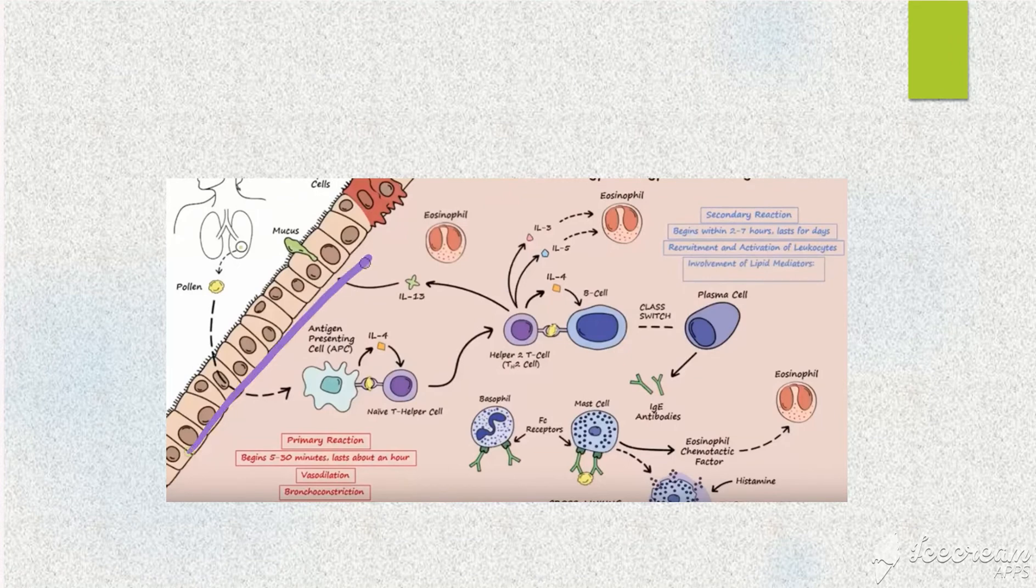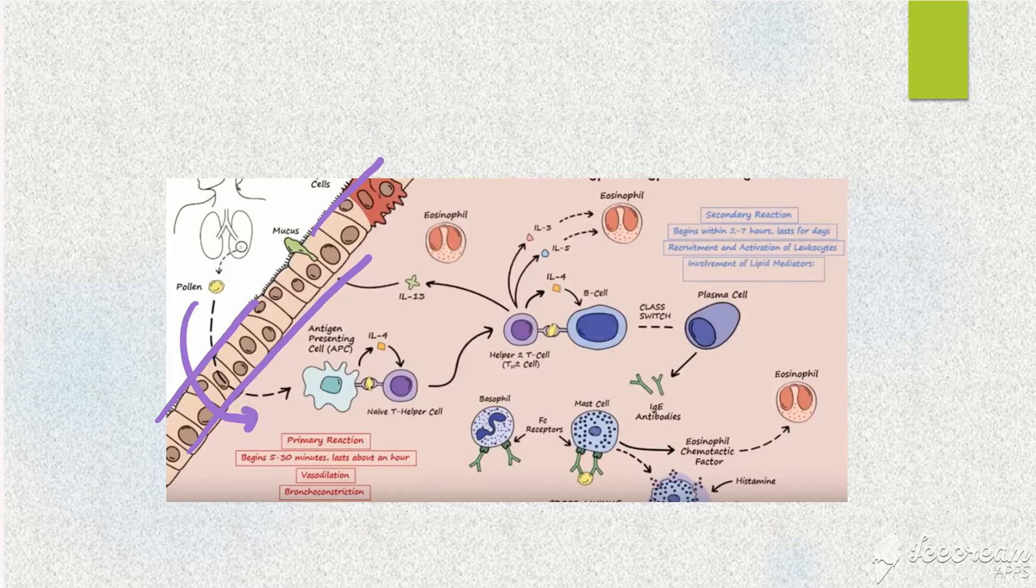This is your respiratory epithelium, your ciliated columnar epithelium. Your pollen grain is entering and will be taken up by your antigen presenting cell and presented to a T helper cell.